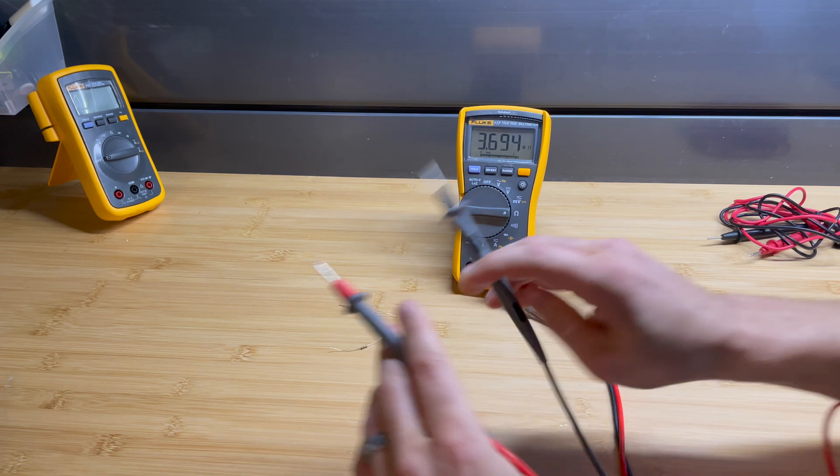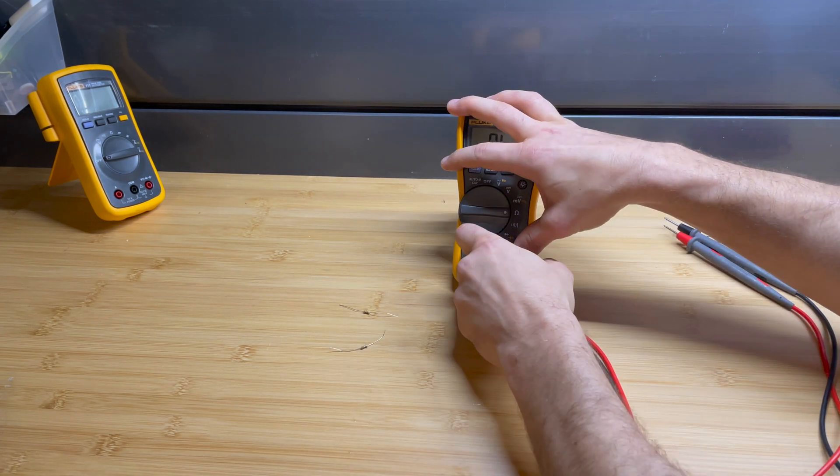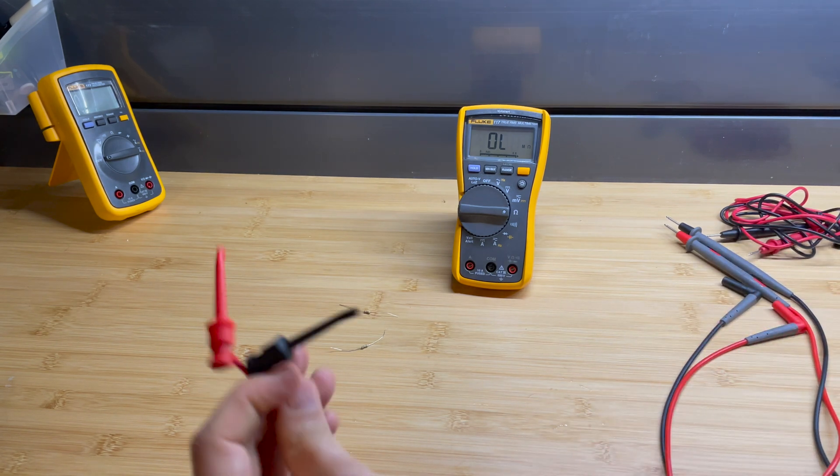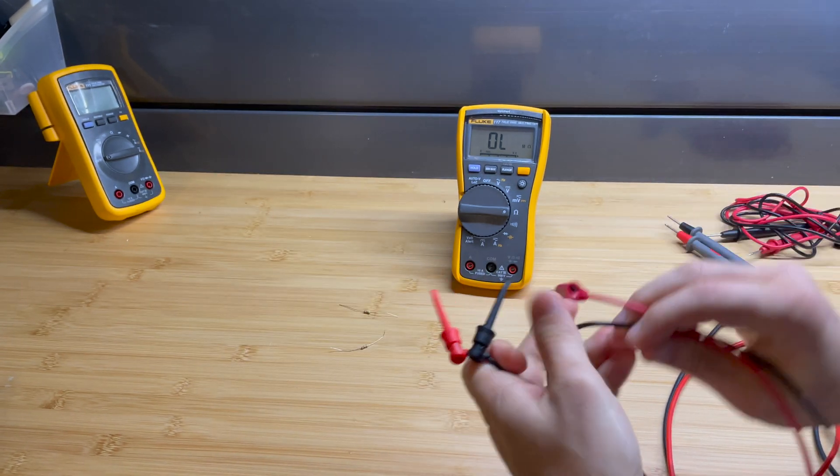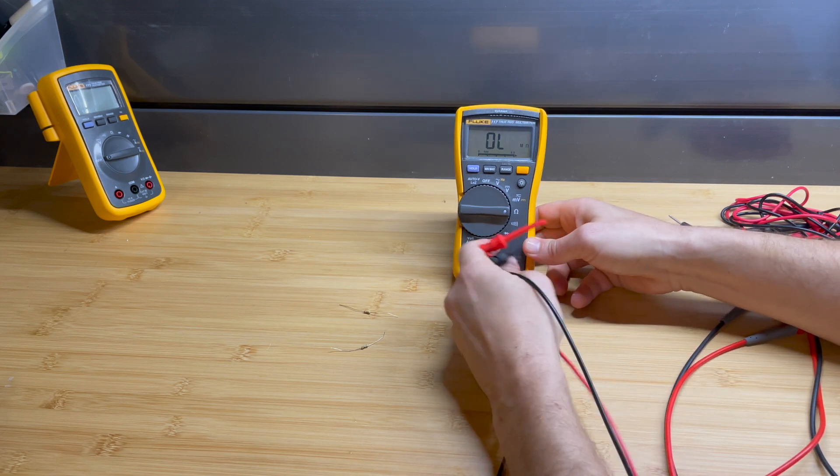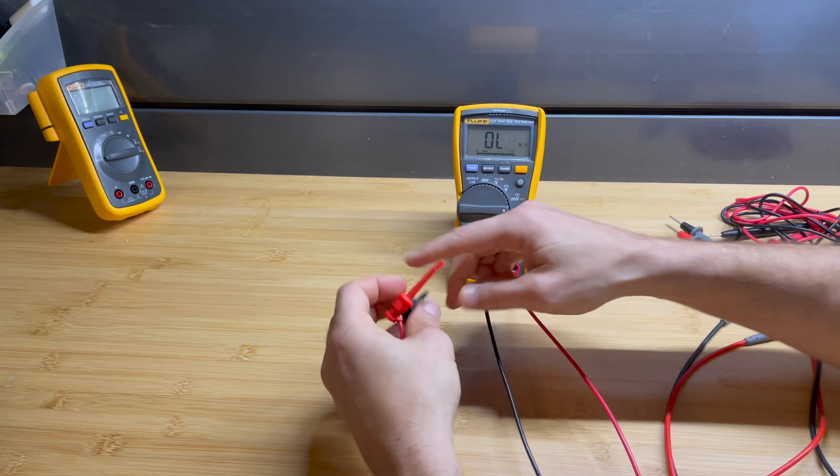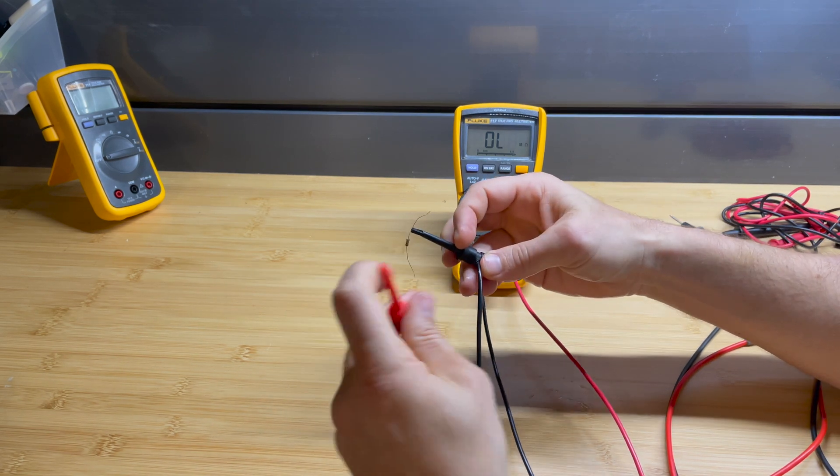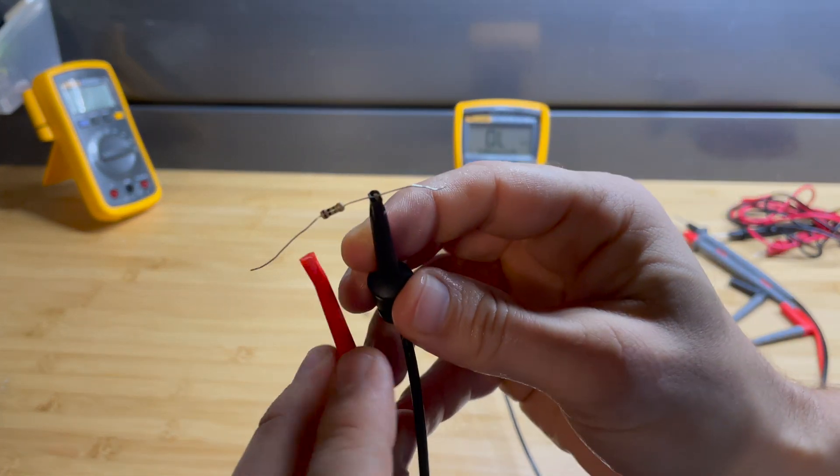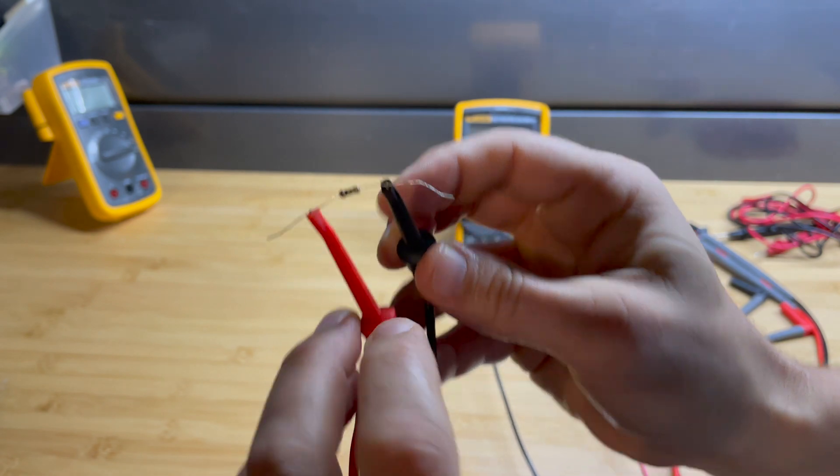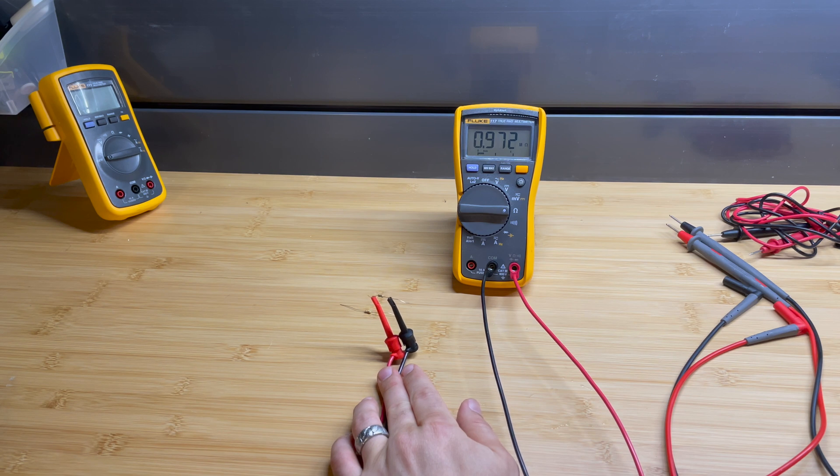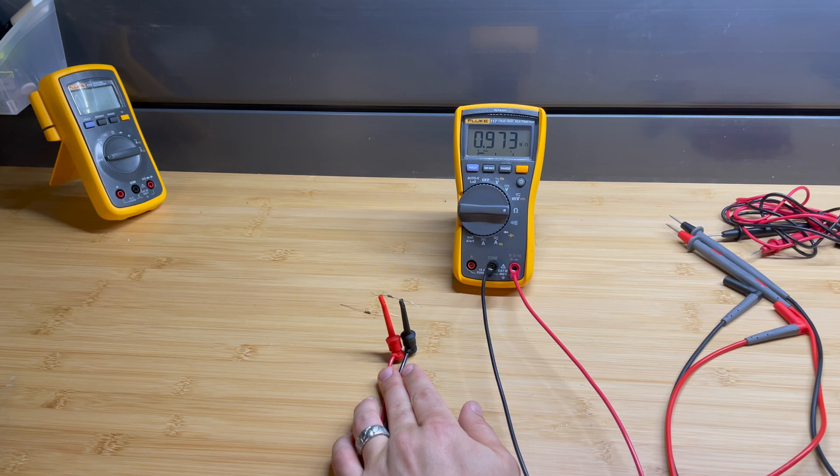Even better way than that is if you have some clips like this, right? Because it can still be hard to make a good connection. But if you have nice clips, clip that on, hook that on there. And there we go. Now you don't have to worry about pinning it down. You can just read a consistent 0.972 megaohms.